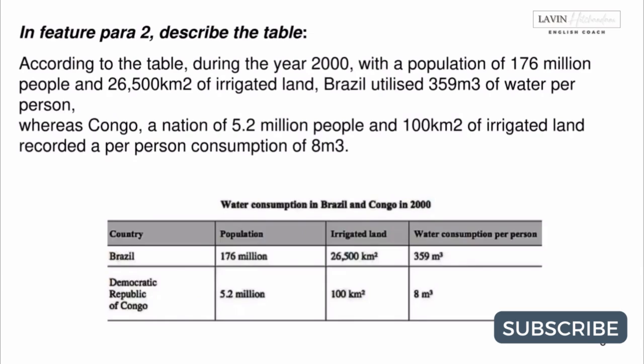In Feature Para 2, describe the table. According to the table, during the year 2000, with a population of 176 million people and 26,500 square kilometers of irrigated land, Brazil utilized 359 cubic meters of water per person. Whereas Congo, a nation of 5.2 million people and 100 square kilometers of irrigated land, recorded a per-person consumption of 8 cubic meters.